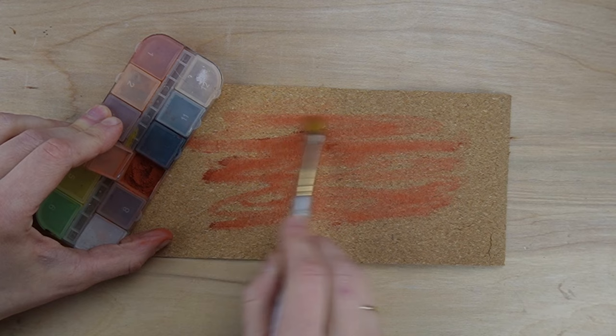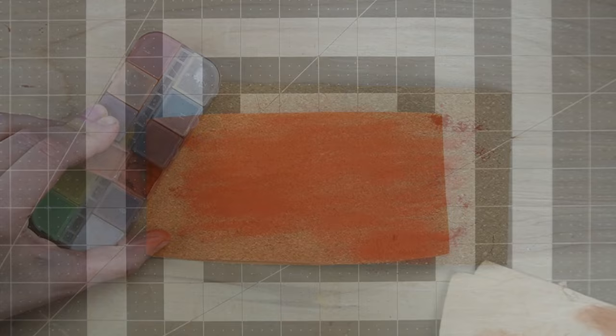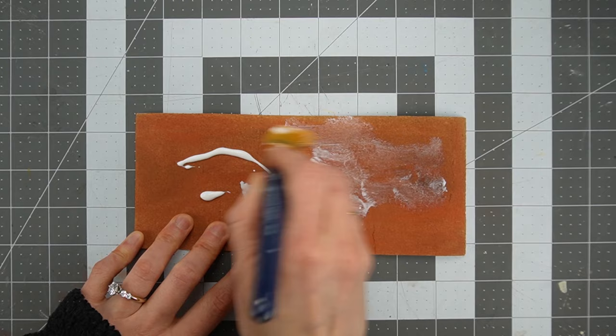I went a little overboard, but you can leave more of the cork showing for a variation of color. To keep the pastel from rubbing off, I'm sealing it with matte mod podge. You can use Elmer's glue instead, although it may be a little shiny, and you can also try hairspray or a fixative spray.